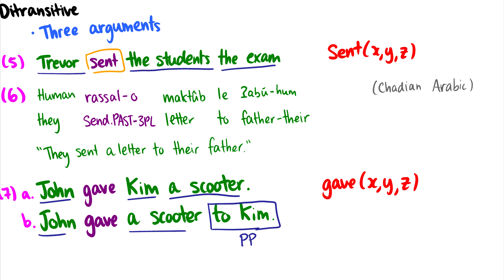Let's take a look at this Chadian Arabic example. So 'they send past third plural letter to father there.' Same pattern here. We have 'sent,' and for the arguments, 'they' is the one doing the sending. 'Letter' is the thing being sent. And 'to their father' is where the thing is being sent. So once again, three arguments.